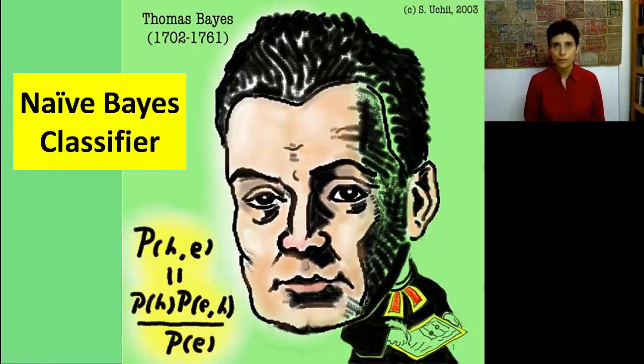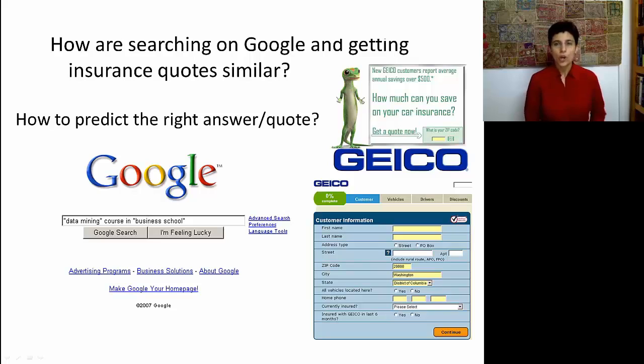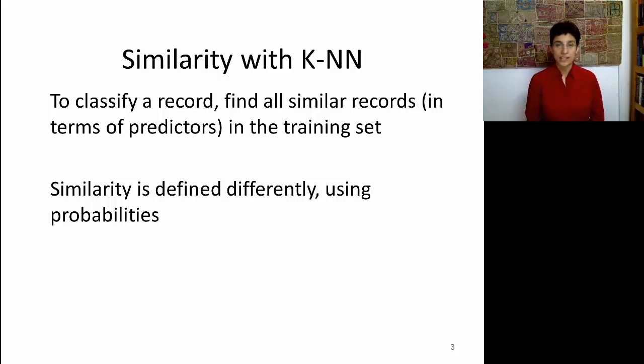In this session, we're going to look at a very useful classifier called the Naive Bayes classifier. Similar to k-nearest neighbors, we have the same concept of similarity going on. Remember that searching for keywords on Google or getting an insurance quote is based on finding people or users who are similar to you in terms of your predictor profile, and based on that, predicting your outcome. The same idea is behind Naive Bayes. The difference is that similarity in the Naive Bayes context is based on the notion of probability rather than distances.